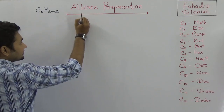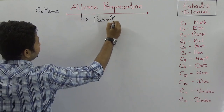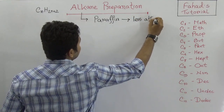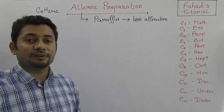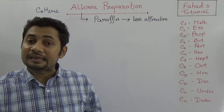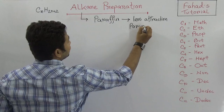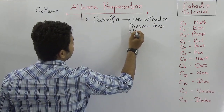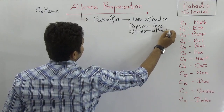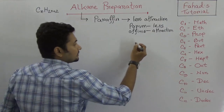That is why alkane is called paraffin. Paraffin means less attraction — 'param' means less and 'affinis' means attraction. Alkanes don't have much attraction or affinity toward other compounds, which is why alkane is called paraffin.